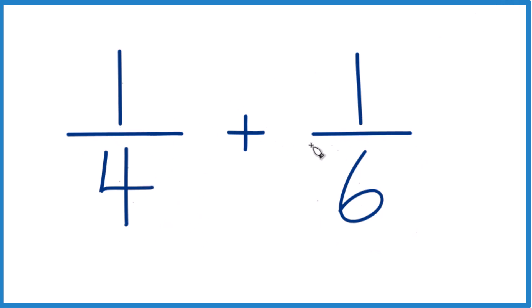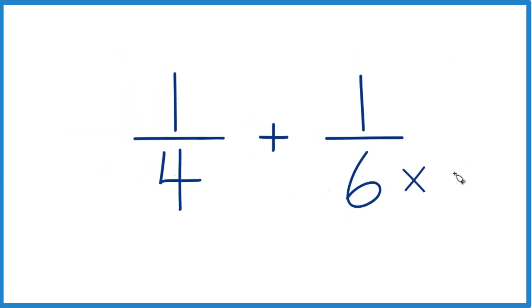We could just take four times six and then over here six times four. So six times four gives us 24 and four times six gives us 24. That would give us the same denominator.